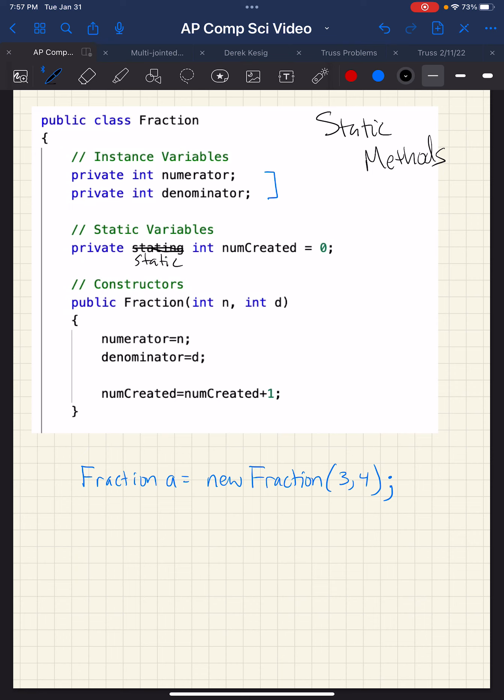Now for static methods, a static method is one that, like here, we might in the fraction class have a method decimal value. So you'd say a dot decimal value. A fraction object a takes the action, a dot decimal value.